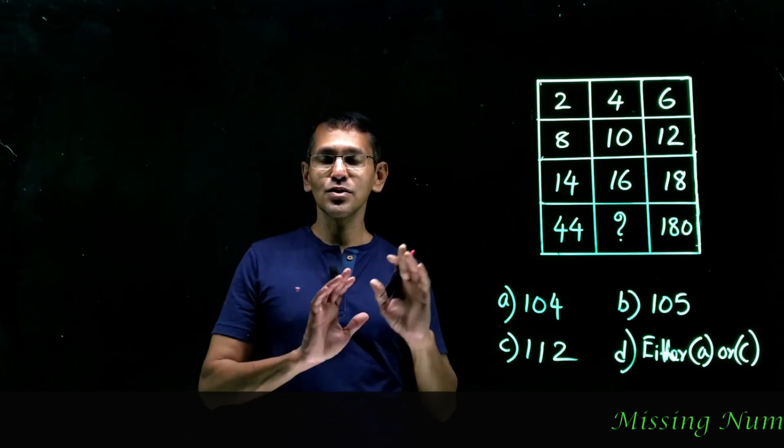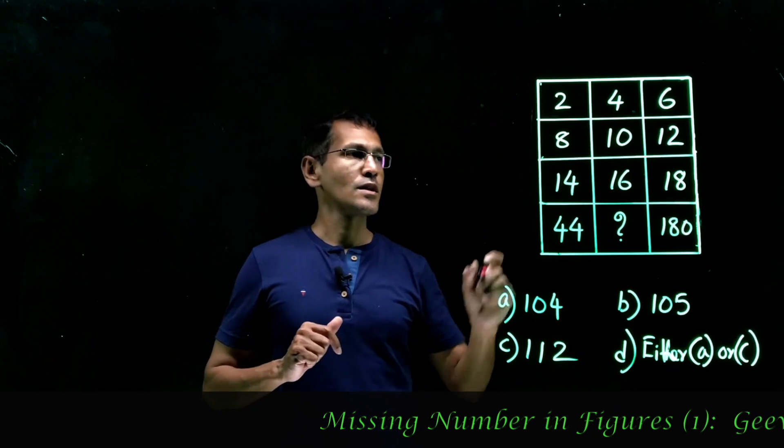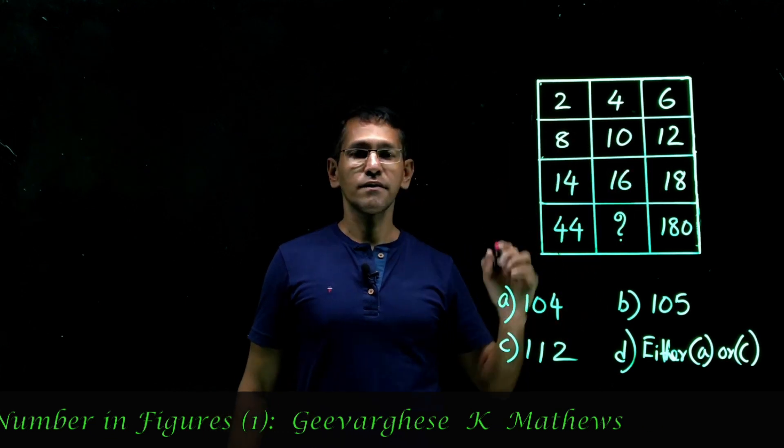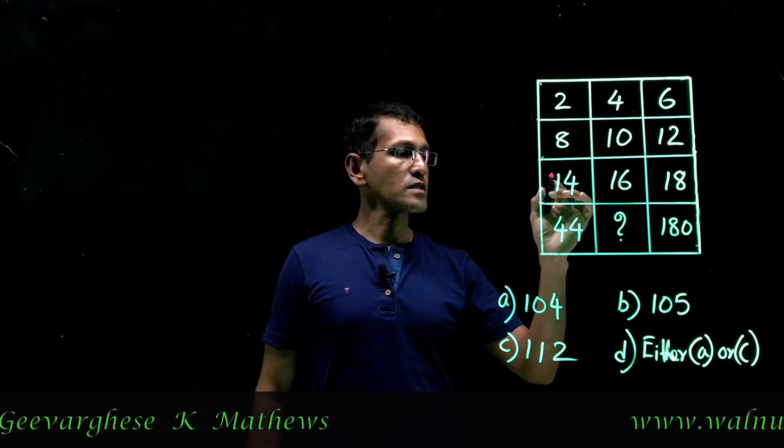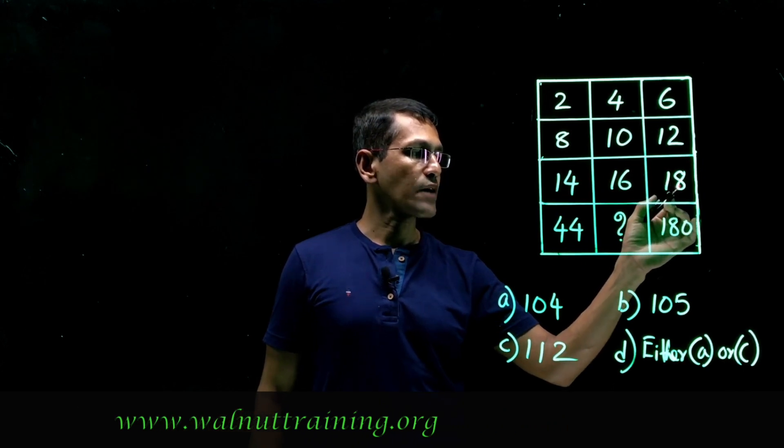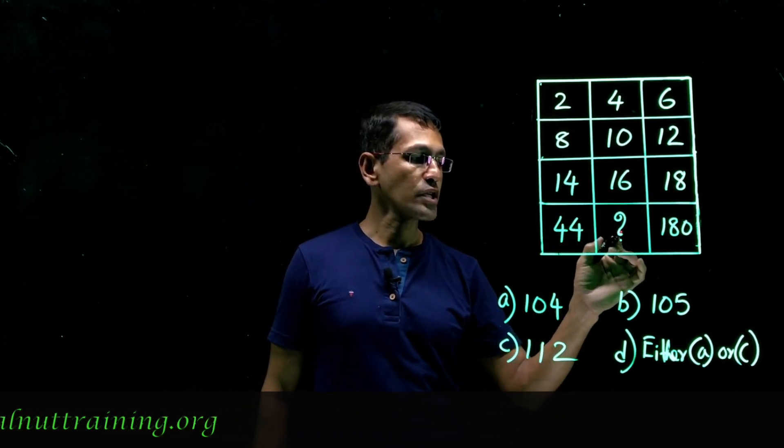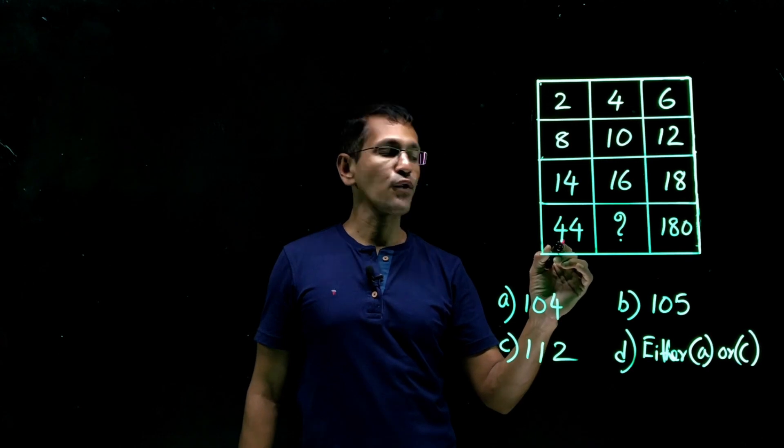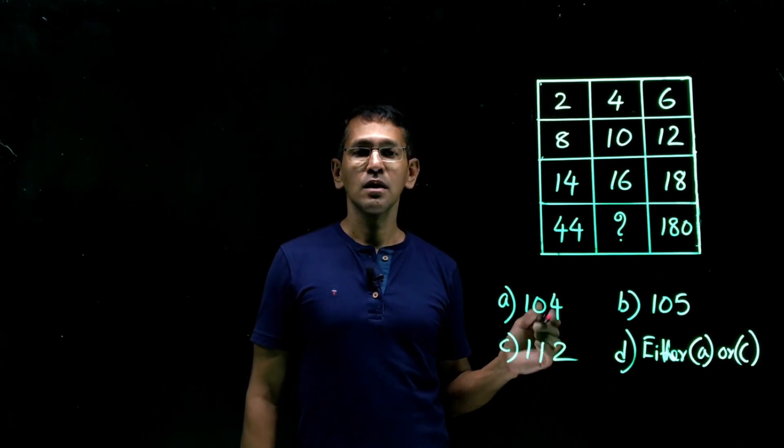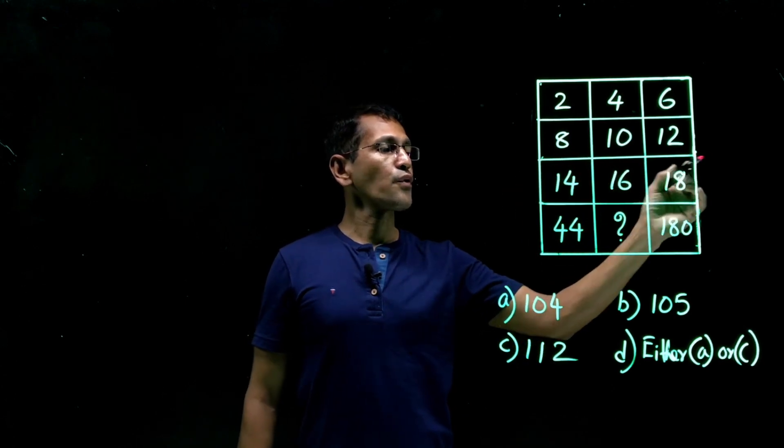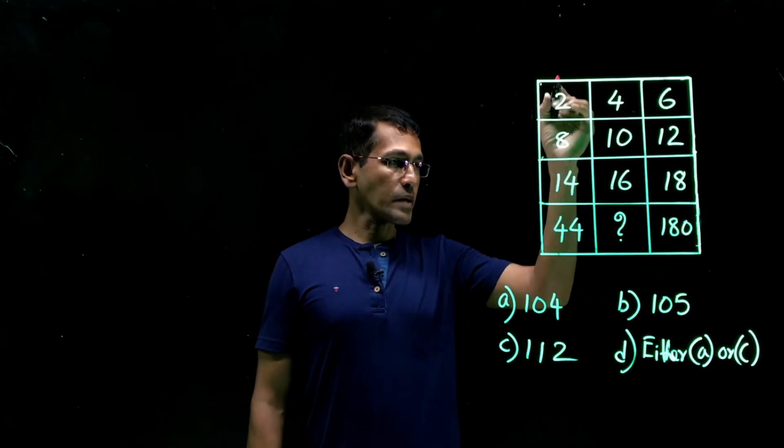Look at it. People call it numerical puzzles or Sudoku puzzles. Doesn't matter. How do we crack it? So we have 2, 4, 6, 8, 10, 12, 14, 16, 18. These are even numbers and consecutive even numbers. That is exactly in the order. Next one would be 18 after 18. This would be 20, 22, 24. But this is not in the order. Up to here it's 18. Then we have 44. Then we have a question mark. Then 180. We need to find the pattern here. Either it's a row-wise pattern, or it could be a column-wise pattern.